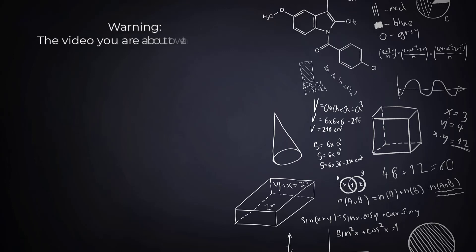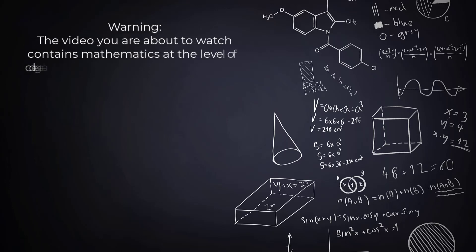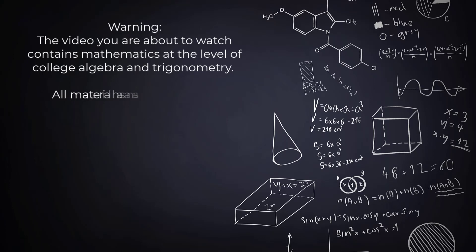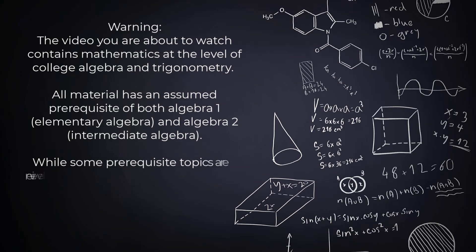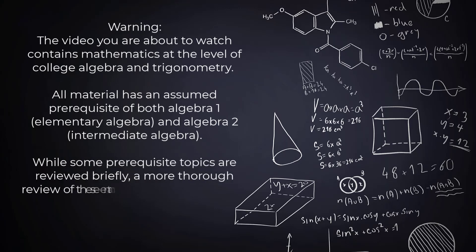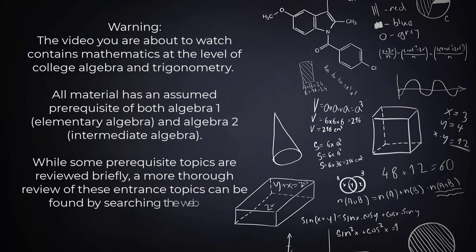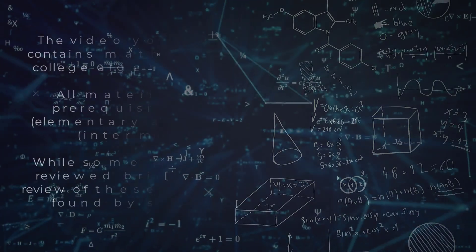Warning! The video you're about to watch contains mathematics at the level of college algebra and trigonometry. All material has an assumed prerequisite of both Algebra 1, which is Elementary Algebra, and Algebra 2, which is Intermediate Algebra. While some prerequisite topics are reviewed briefly, a more thorough review of these entrance topics can be found by searching the web.